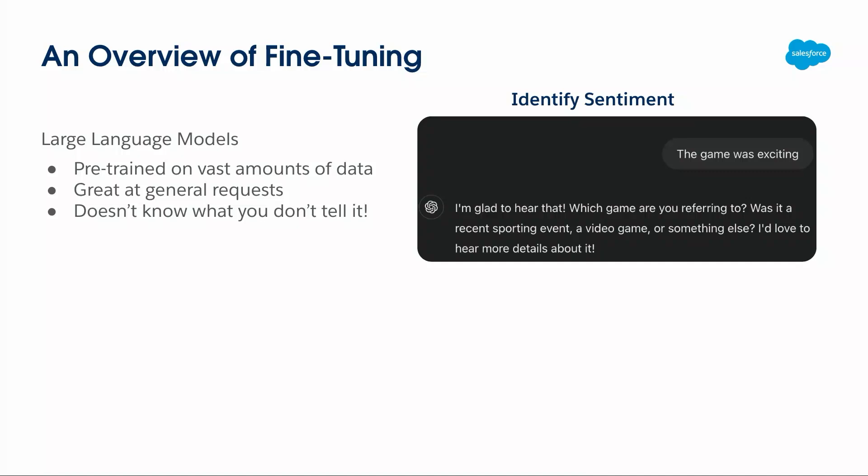So if I'm trying to do something around identifying sentiment — say the input is 'the game was exciting' — I'm hoping to get back something saying that's a positive statement or a negative statement. But it doesn't know any of that because I haven't told it. So what it does, it's very conversational: 'I'm so pleased for you, what game was it?' Which is all very nice, but that's not what I want.